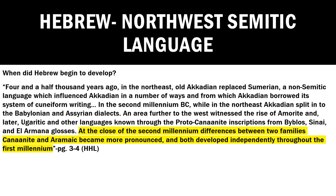When did Hebrew begin to develop? Four and a half thousand years ago in the Northeast, old Akkadian replaced Sumerian — a non-Semitic language — which influenced Akkadian in a number of ways, and from which Akkadian borrowed its system of cuneiform writing. In the second millennium BC, Akkadian split into the Babylonian and Assyrian dialects. An area further to the west witnessed the rise of Amorite and later Ugaritic, and other languages known through proto-Canaanite inscriptions from Byblos, Sinai, and El Armonoglossus. At the close of the second millennium, differences between Canaanite — including Hebrew — and Aramaic became more pronounced, and both developed independently throughout the first millennium.